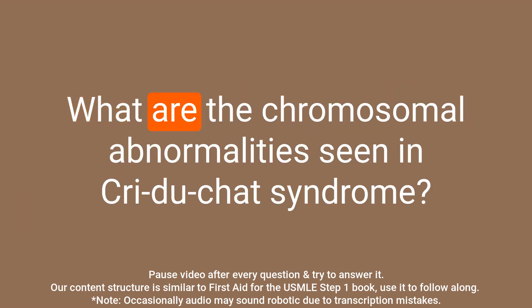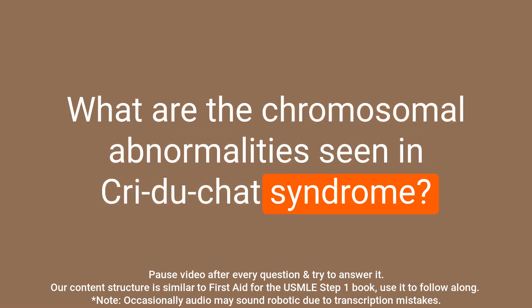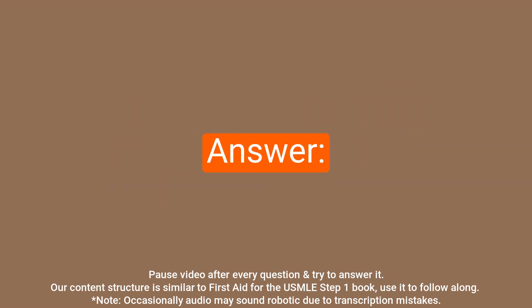Question: What are the chromosomal abnormalities seen in Cri-du-chat syndrome? Answer: Cri-du-chat syndrome is caused by a deletion on the short arm of chromosome 5, specifically 46,XX or XY, 5p-.